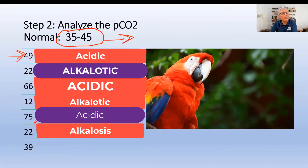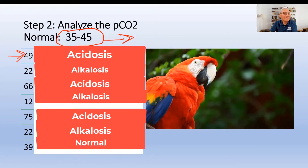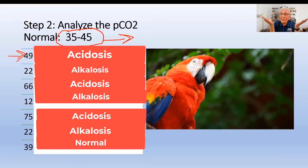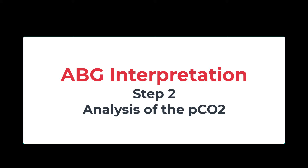How about 22? Alkalotic. And how about 39? Normal. So now you understand how to evaluate the PCO2 — think of coffee. If there's too much, or more than 45, it will become acidotic. If you put less than 35, then it's going to be alkalotic. This concludes step two of interpreting arterial blood gases, analysis of the PCO2. Thank you.